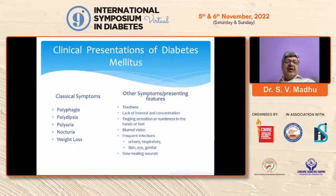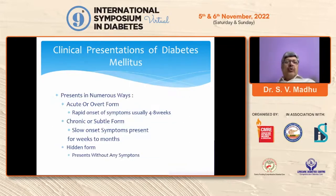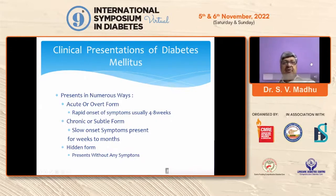Tingling sensations or numbness in the hands or feet, for which there may be several causes including diabetes; patients having frequent infections — urinary, respiratory, skin, eye, genital, or any other place in the body — and patients with slowly healing wounds. More importantly, the clinical presentations of diabetes could vary depending on how it takes onset, and this may help us in arriving at what type of diabetes the patient is suffering from.